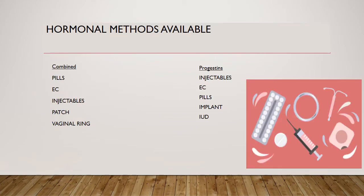The following hormonal methods are available either as combined or progestogen-only. Combined hormonal contraceptives are available as a patch, a vaginal ring, and as an injectable. Progestogens are available as injectables, pills, the implant, as well as the IUD.